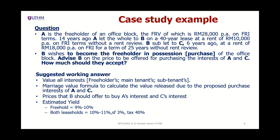To solve this, we need to take three steps. First, value all the interests — the freeholder's, main tenant's, and subtenant's. Second, calculate the value released due to the proposed purchase of the interests of A and C. Third, calculate what price B should offer to buy A's interest and C's interest.